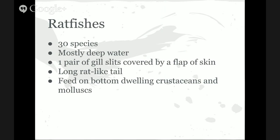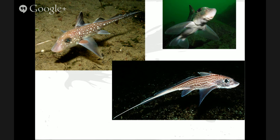Our third group of cartilaginous fishes are ratfishes, also called chimeras. There are around 30 species, mostly deepwater. They are distinguishable because they have one pair of gill slits covered by a flap of skin — a feature seen in bony fishes, not other cartilaginous fishes. They are called ratfishes because of their long rat-like tail, and they feed on bottom-dwelling crustaceans and other mollusks.